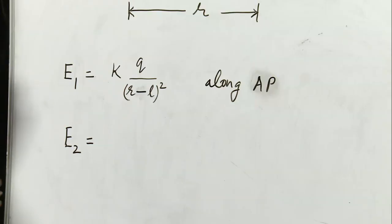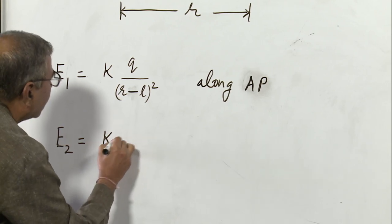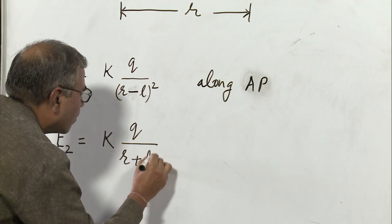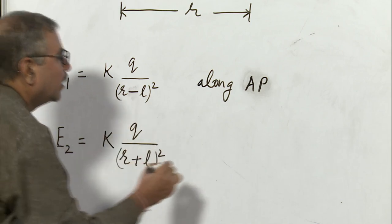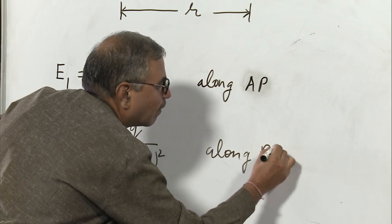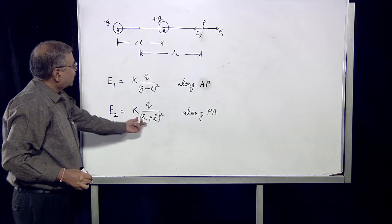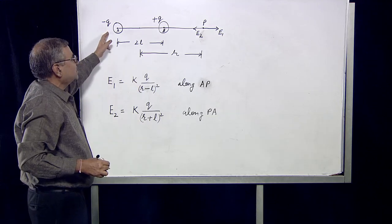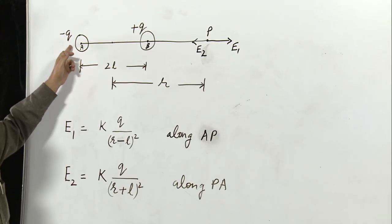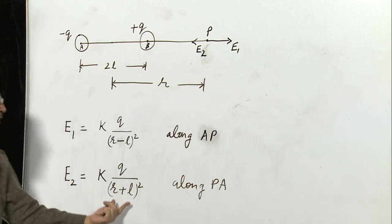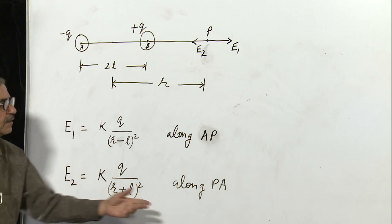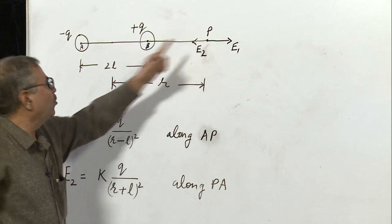The field at point P due to the negative charge, let us represent it with E2. Its direction will be along PA. Why is it (R plus L) whole square? Because the distance from the center is R, so L has to be added to it to get the distance between minus Q and P. So E2 is equal to KQ upon (R plus L) whole square, and its direction will be from P to A.